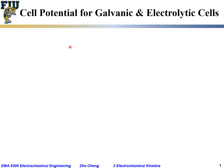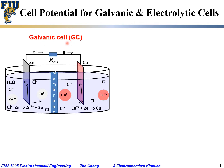Let us first review what we have talked about before regarding cell potential for different types of electrochemical cells: galvanic cells and electrolytic cells.